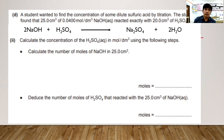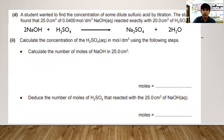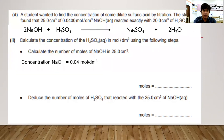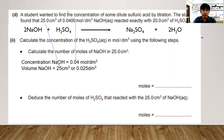Calculate the concentration of H₂SO₄ in mol/dm³ using three steps: moles of NaOH, moles of H₂SO₄, then concentration of H₂SO₄. Given: concentration of NaOH = 0.04 mol/dm³, volume = 25.0 cm³ = 0.025 dm³.